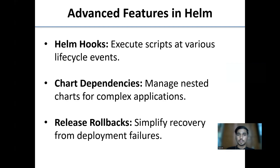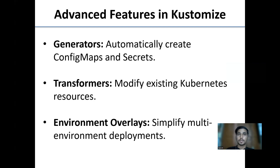Advanced features in Helm: first, Helm hooks — execute scripts at various lifecycle events; second, chart dependencies — manage nested charts for complex applications; third, release rollbacks — simplify recovery from deployment failures. Advanced features in Kustomize: first, generators — automatically create ConfigMaps and Secrets; second, transformers — modify existing Kubernetes resources; third, environment overlays — simplify multi-environment deployments.